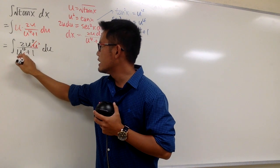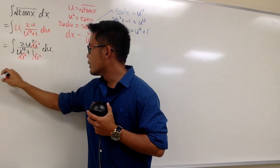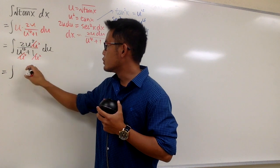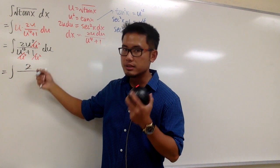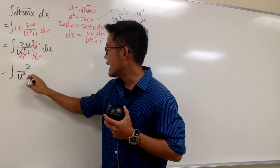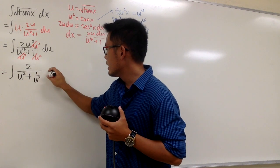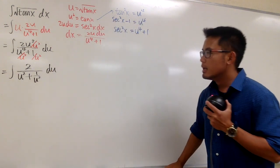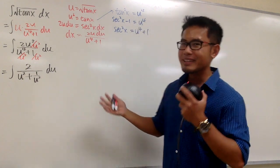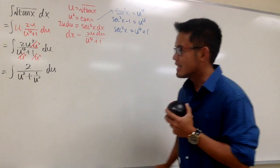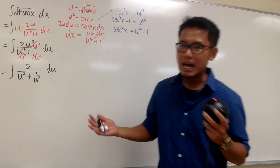Let me divide the numerator by u squared, and let me divide the denominator by u squared. Now this integral becomes the integral of 2 over u² + 1/u², du. The u⁴ divided by u² is just u², and 1 over u² is just 1/u². We now have a complex fraction, but the good news is the highest power is now just u squared, and 1/u² — that may be a good sign.